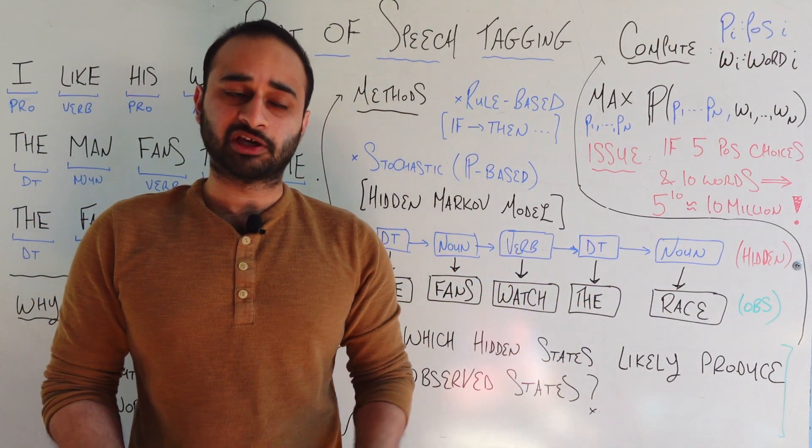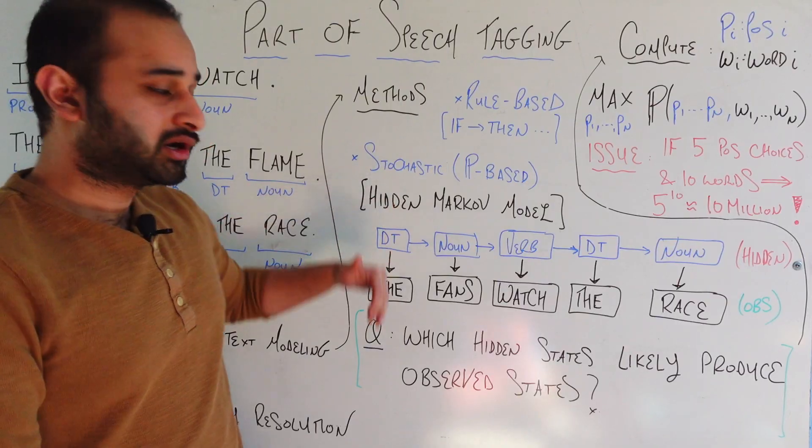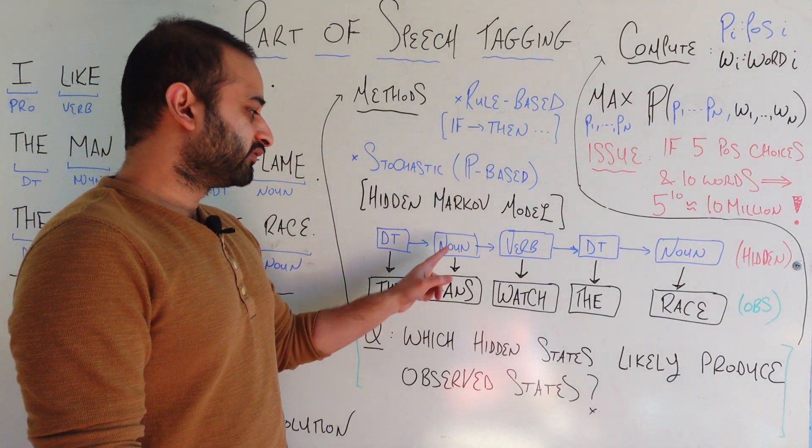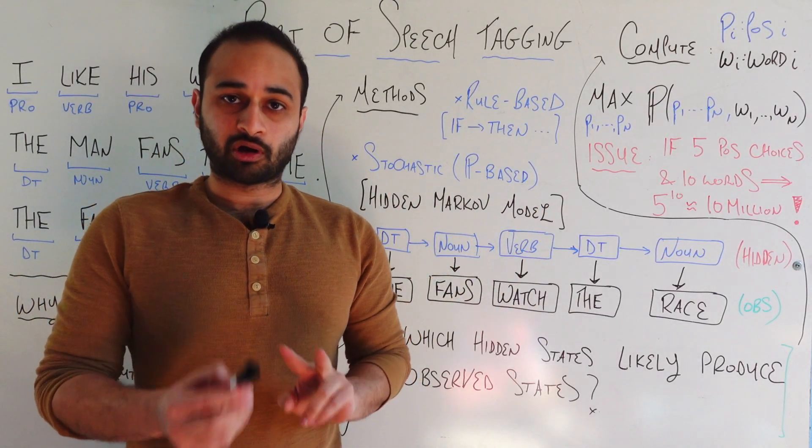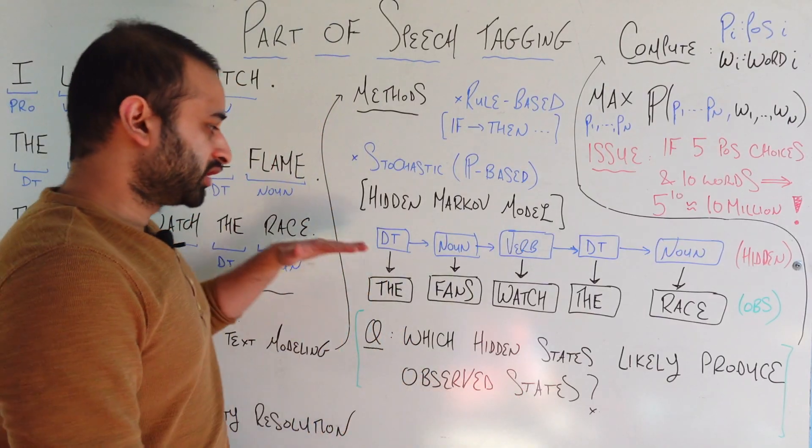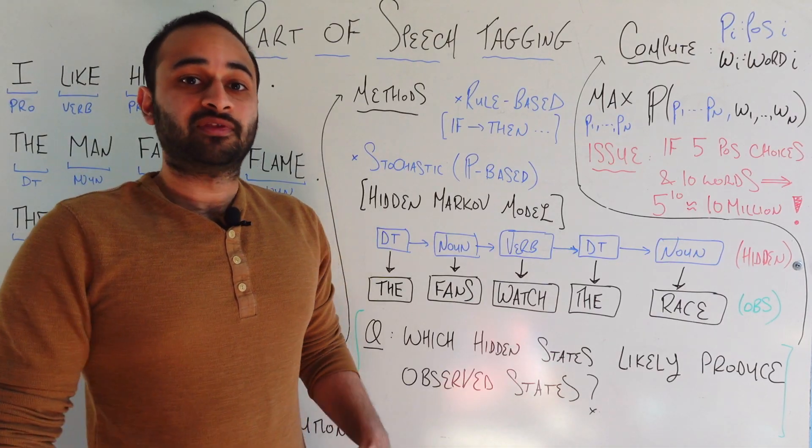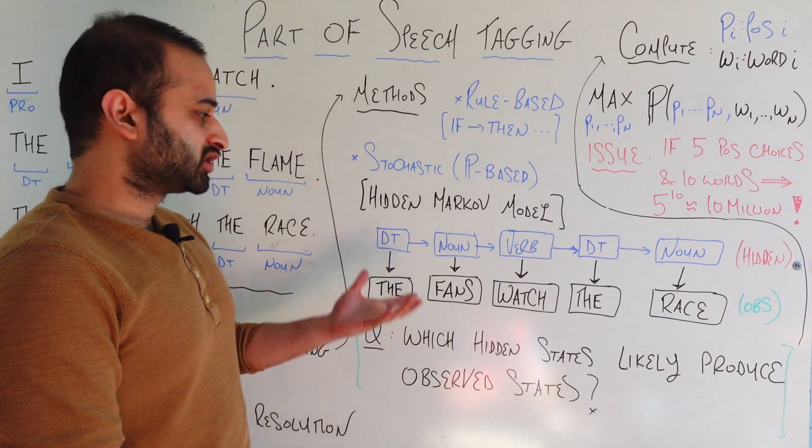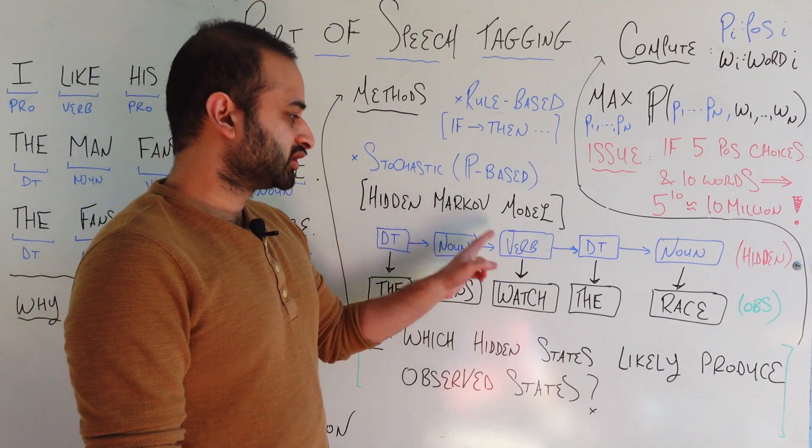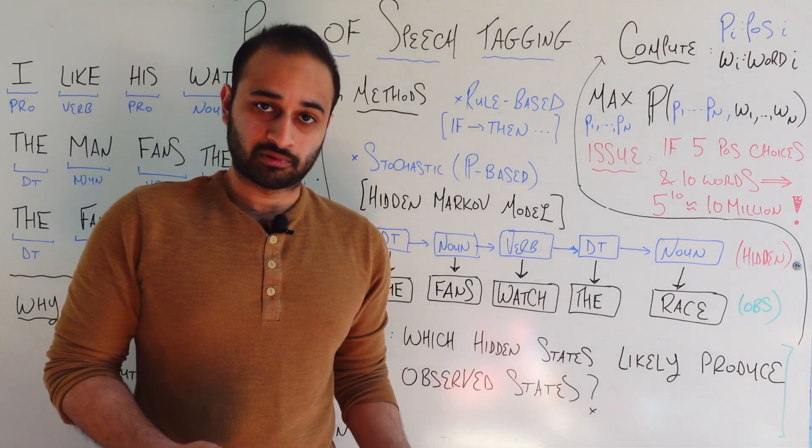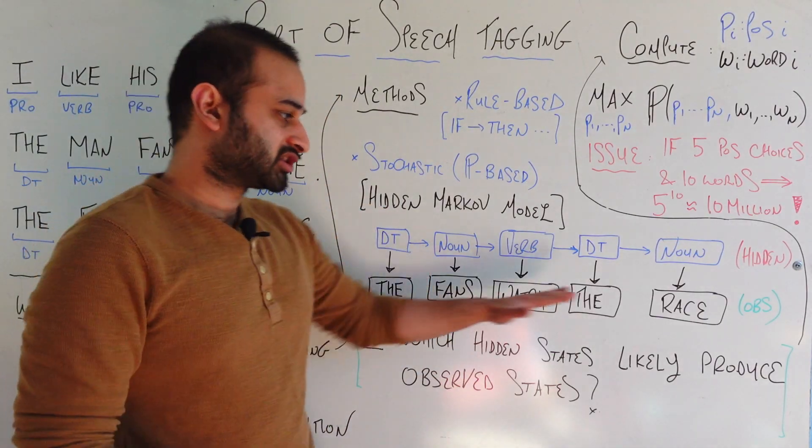Now, the Markov part comes in because it says that the hidden states have transitions from one to the next. For example, if this one's a determiner, there's a certain probability that the next one's a noun. Then given this one's a noun, there's a certain probability the next one's a verb and so on. So the two processes going on, the two distinct parts of this process, rather, are the transitions or the transition probabilities from one hidden state to the next. And the, as they're called, emission probabilities, which say, given that something's a noun, what's the probability that it's the word fans? Given something's a verb, what's the probability that it's the word watch?